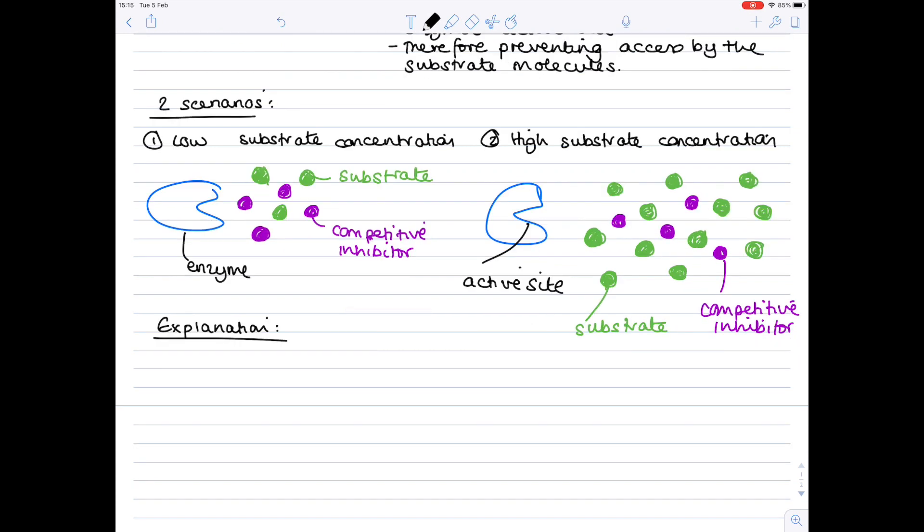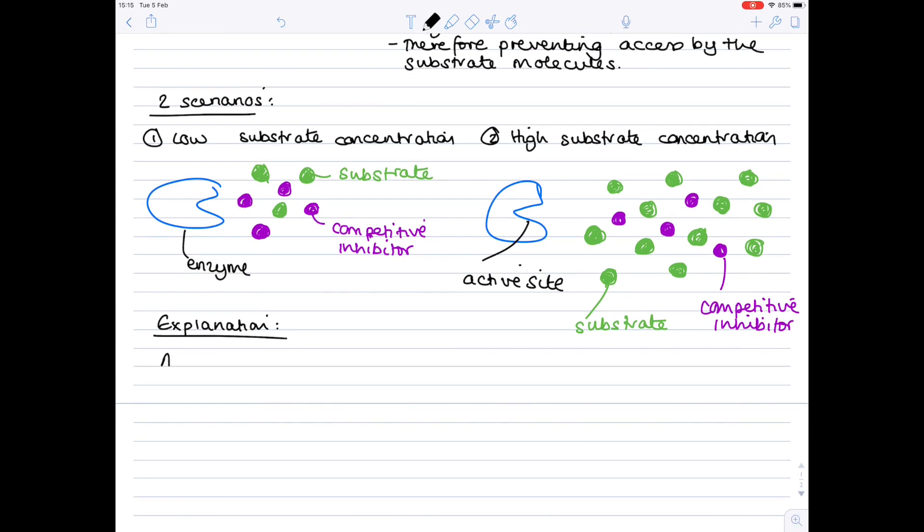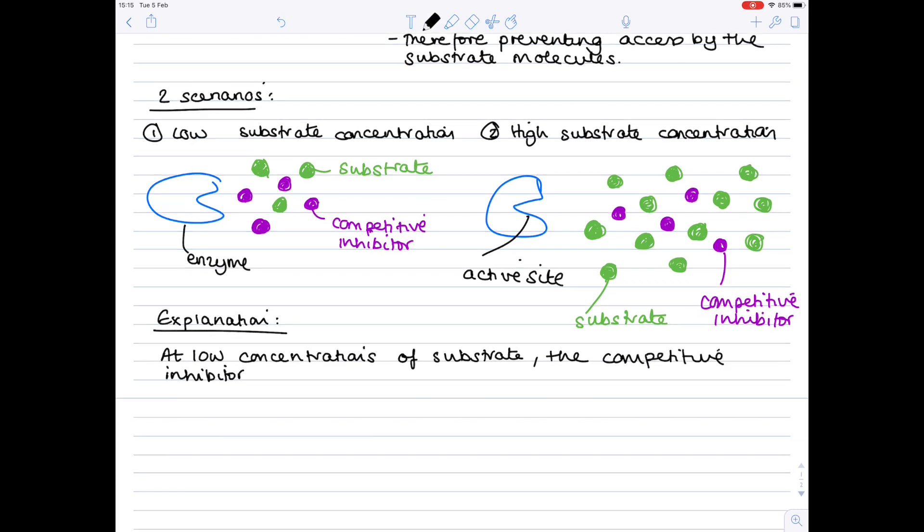And now we're going to write an explanation. So at low concentrations of substrate, the competitive inhibitor binds to the enzyme's active site, preventing substrate entry. At higher substrate concentrations, two things are more likely. A substrate is more likely to come in contact with the enzyme's active site.